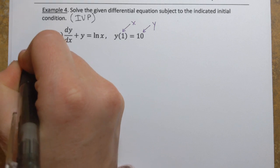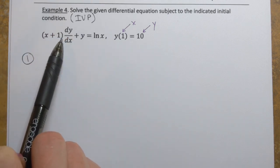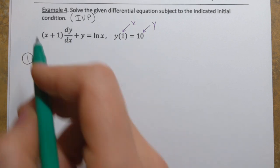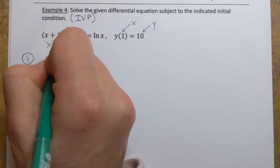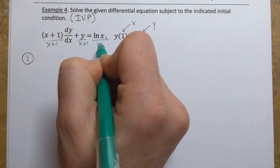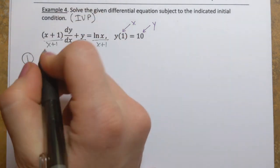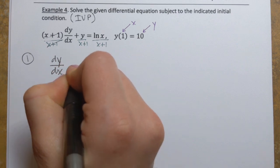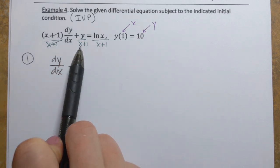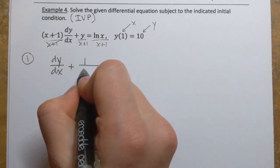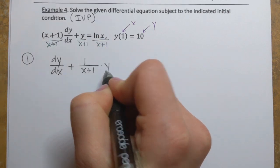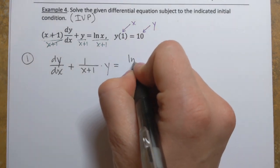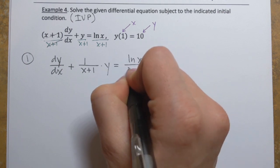In the first step, we have to put this equation in standard form — that is, when there is no coefficient in front of dy/dx. So we need to divide every term by x plus 1. This is going to be the standard form: dy/dx plus 1 over (x plus 1) times y, so that coefficient of y is more obvious. And then the right-hand side is ln(x) over (x plus 1).